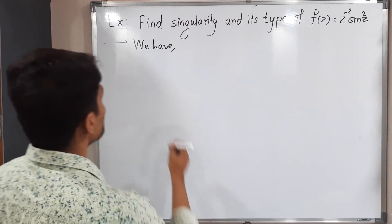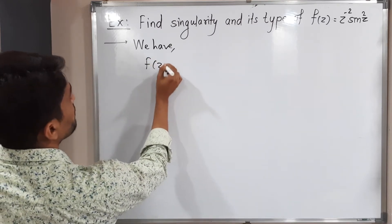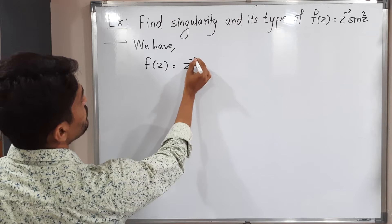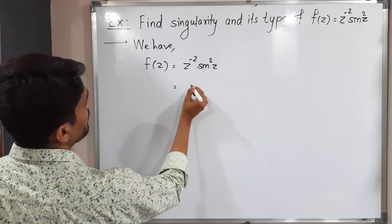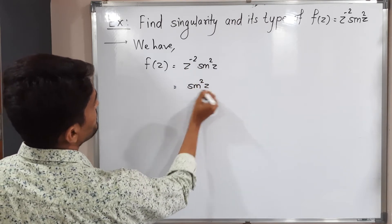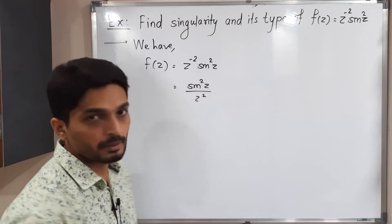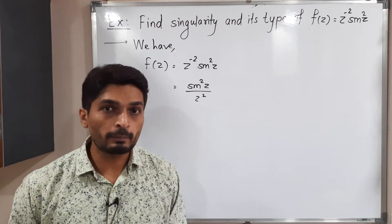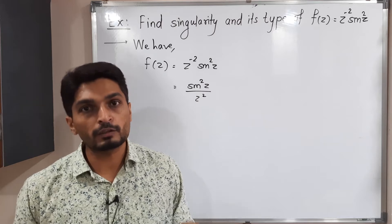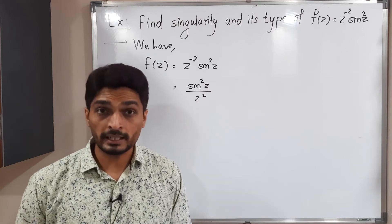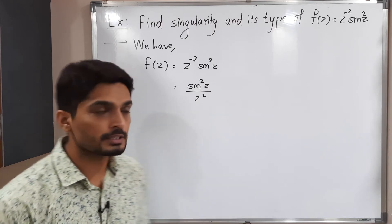Let us write the given function first. f(z) = z/(2 - 2sin²z). That means we can write z² in the denominator. You can easily see here if I put z = 0, denominator will be 0 and function won't be analytic. So z = 0 is a singular point.